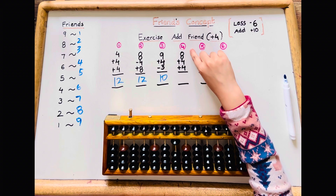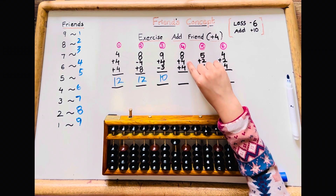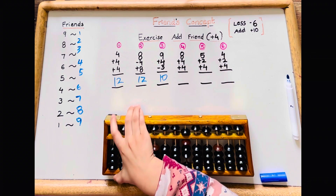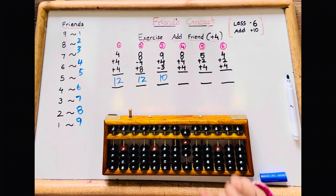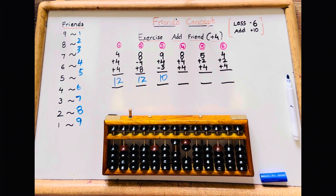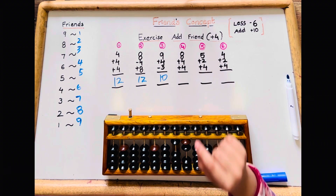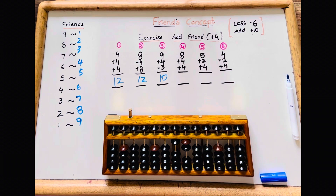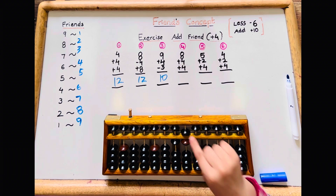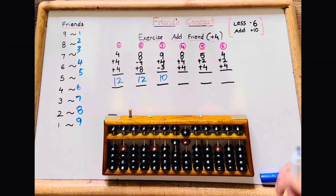Let's do the fourth sum: 8 plus 4 plus 4. 8 plus 4 — there's no plus 4, so minus 6 add 10. Then 10 add 4 — there's no add 4, so minus 1 add 5. The answer is 16.